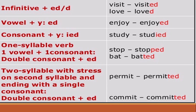If the verb has a consonant-vowel-consonant pattern, I double the last letter and add 'ed'. Like 'stop' — 't' consonant, 'o' vowel, 'p' consonant — I double 'p' and add 'ed'. Similarly: 'bat' — 'b' consonant, 'a' vowel, 't' consonant — I double 't' and add 'ed': batted. 'Permit' — 'm' consonant, 'i' vowel, 't' consonant — double 't': permitted. 'Commit' — double 't': committed.